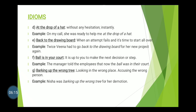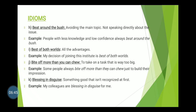Idiom G: 'Barking up the wrong tree.' Meaning: looking in the wrong place or accusing the wrong person. Example: Nisha was barking up the wrong tree regarding her demotion. Idiom H: 'Beat around the bush.' Meaning: avoiding the main topic; not speaking directly about the issue. Example: People with less knowledge and low confidence always beat around the bush.